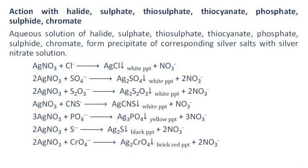Action with halide, sulfate, thiosulfate, thiocyanate, phosphate, sulfide, and chromate: aqueous solutions of halide, sulfate, thiosulfate, thiocyanate, phosphate, sulfide, and chromate form precipitates of the corresponding silver salts with silver nitrate solution. Silver nitrate gives a white precipitate with chloride, sulfate, thiosulfate, and thiocyanate; a yellow precipitate with phosphate; a black precipitate with sulfide; and a brick-red precipitate with chromate, as shown in the reactions.